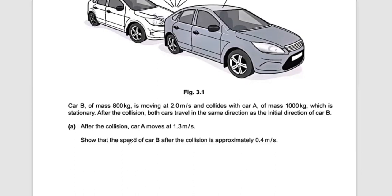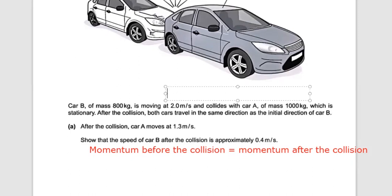The rule is that momentum before the collision must be equal to momentum after the collision. Writing momentum before the collision: Car B has a mass of 800 kilograms moving at 2 meters per second.